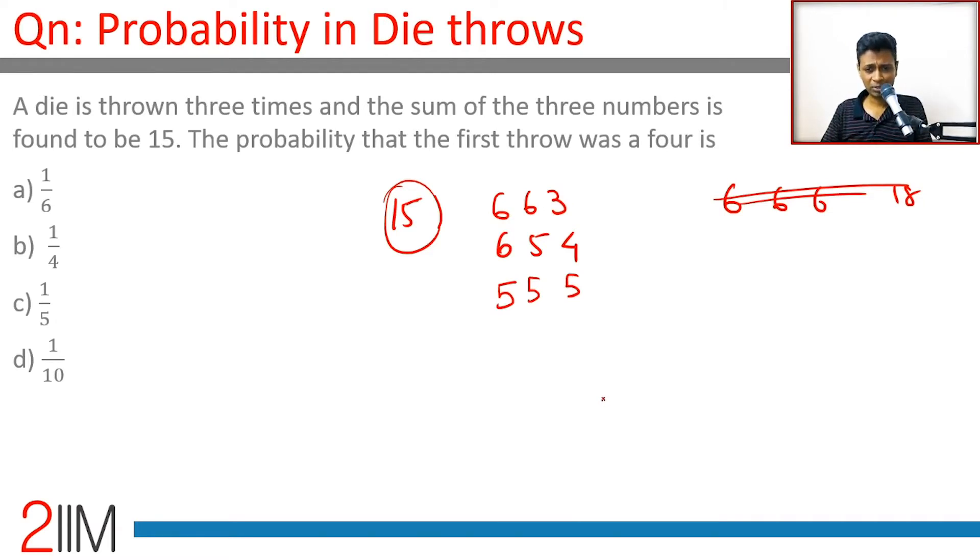Once you have this we're through. Below 5 5 5 we cannot have a sum of 15. If none of the throws is 6, there's only one possibility: 5 5 5. If one of the throws is 6, it's either 6 6 3 or 6 5 4.